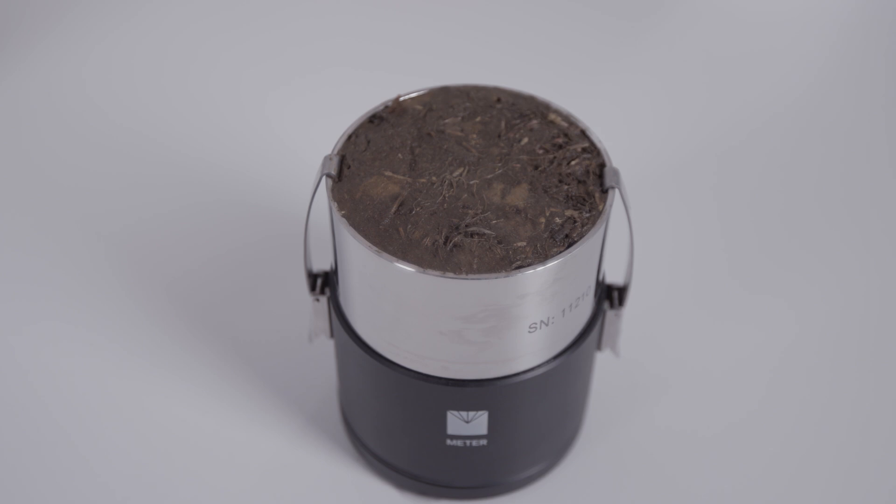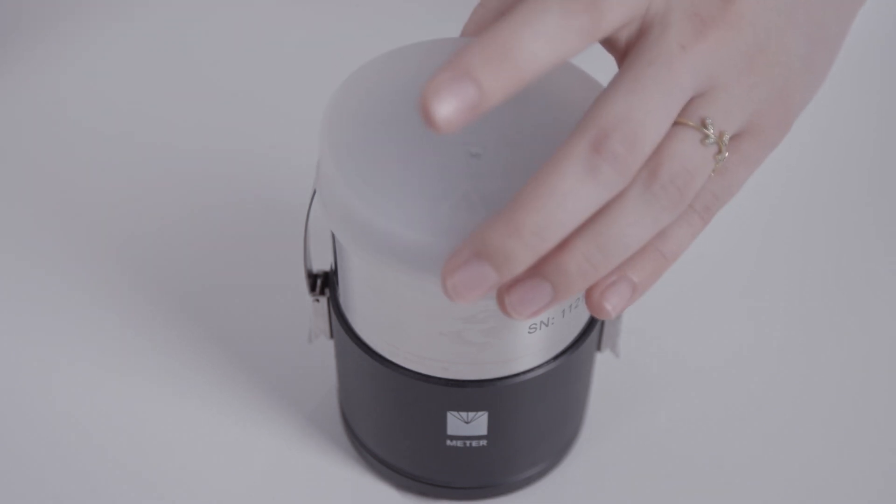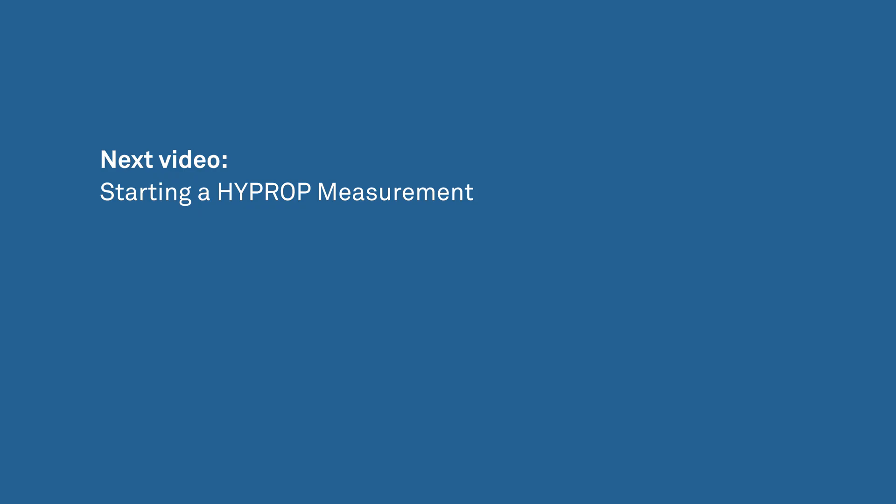Let the sample equilibrate to reach a hydrostatic condition before starting the measurement. Make sure the lid is closed to avoid evaporation. The soil sample and HyProp are now ready.